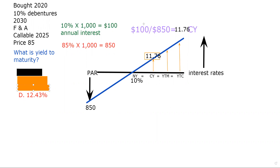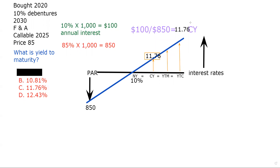The other way I know it's D is because I know that the yield to maturity, based on the relationship on the teeter-totter, has to be somewhere greater than 11.76%. That's the other way I know that number has to be something greater than that. So that's how you answer this question using the teeter-totter.